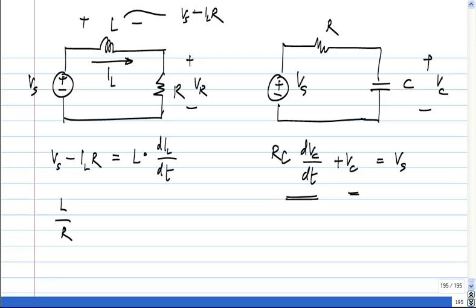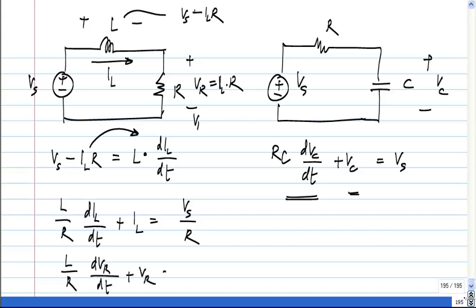If I rearrange this I get L by R times the derivative of Il plus Il equals, if I write it in terms of Vr there is nothing special about it. Vr in this particular case is Il times R. I will get L by R, I get something like that.